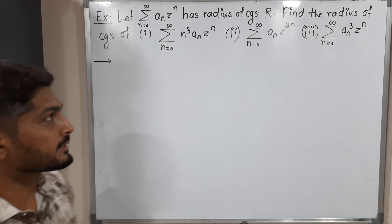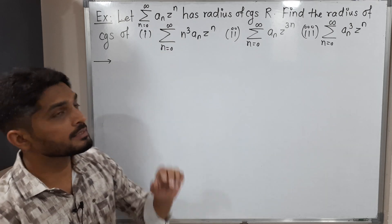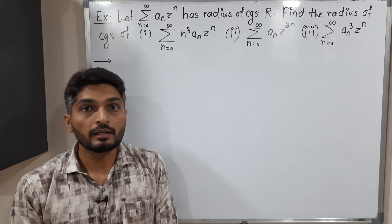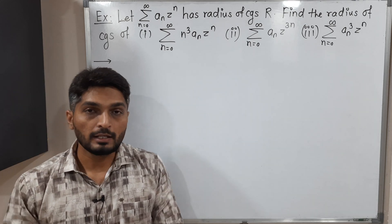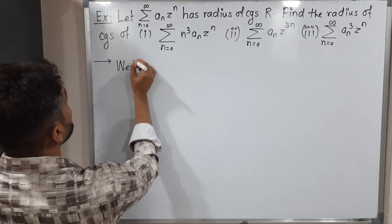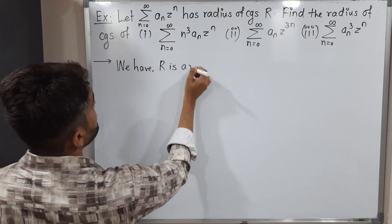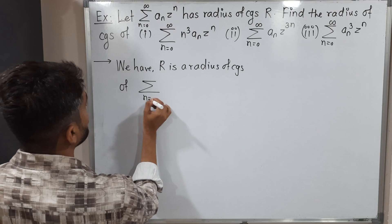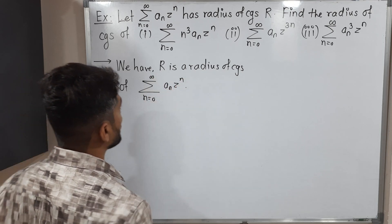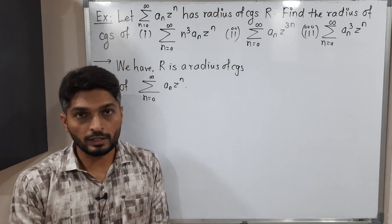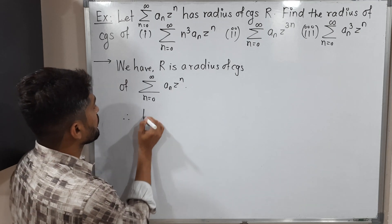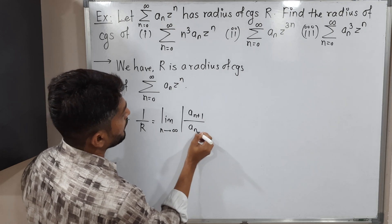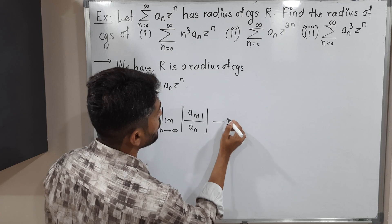In this video we are going to discuss this example. We have a power series summation n, z raised to n. It has radius of convergence r, and with the help of this information we have to find the radius of convergence of three remaining series. So we have r is the radius of convergence of the power series summation n from 0 to infinity, aₙ z raised to n. By definition, the formula gives 1/r = limit as n tends to infinity of |a_{n+1} / aₙ|. Let us call this equation number 1.